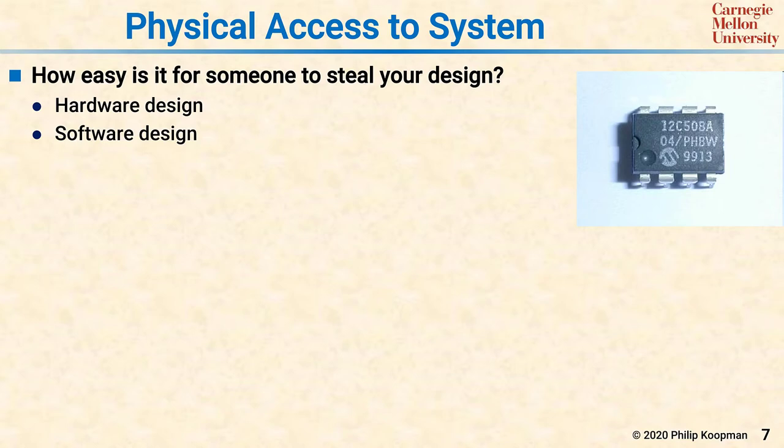Another source of vulnerability is physical access to the system. A significant problem for embedded systems is that the attacker can often buy one and reverse engineer it, or get access to one and pull components out. They're not in locked, guarded machine rooms — they're out in the real world where people have access. If you care about someone stealing secrets such as the design, secret keys, or trade-secret-protected algorithms, you have to consider that they'll be able to get the hardware and software design by reverse engineering.